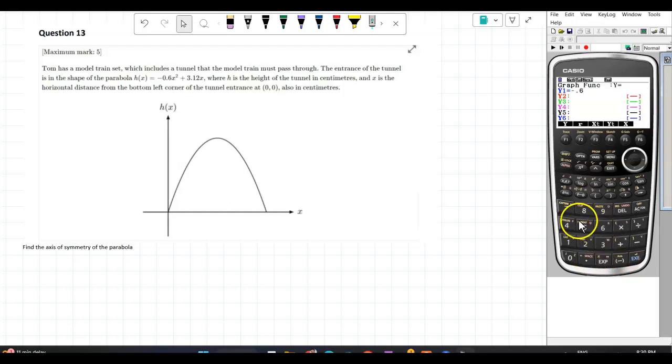Listen, that will be easier than minus b over 2a. You will get everything directly. So minus 0.6x squared plus 3.12x. Graph it. What happened here? I don't know, I hit something wrong. Plus 3.12x.